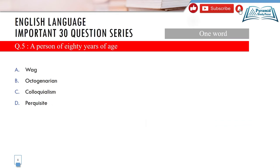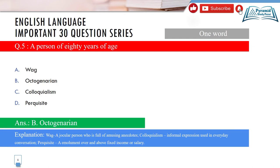Question 5 is a one-word substitution. 'A person of 80 years of age.' Options: A) vague, B) octogenarian, C) colloquialism, D) perquisite. The correct answer is option B — octogenarian. 'Oct' means eight, so octogenarian refers to a person who is 80 years of age.